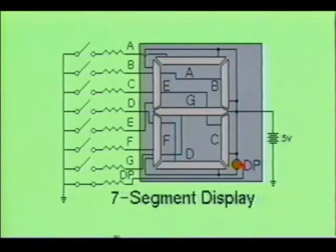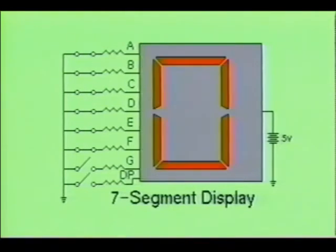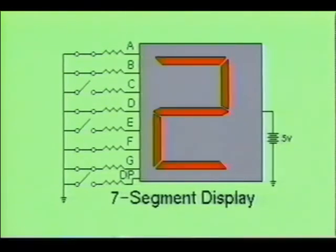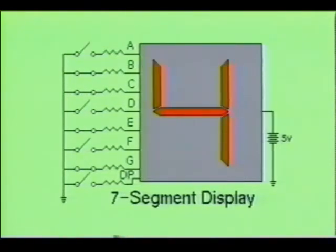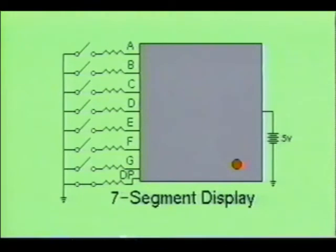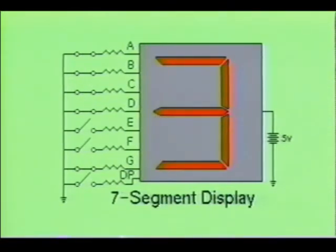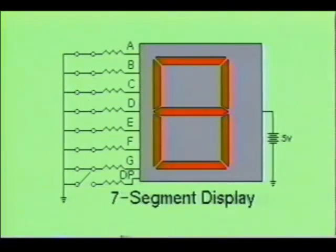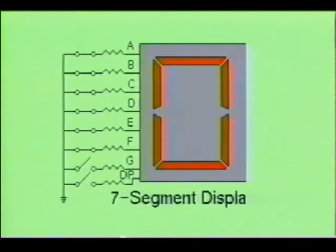The decimal point is energized when displaying more than one digit, or when a number smaller than one must be shown. As you can see, by simply energizing the appropriate LED segments, any of the decimal digits 0 through 9 may be displayed using this simple device.